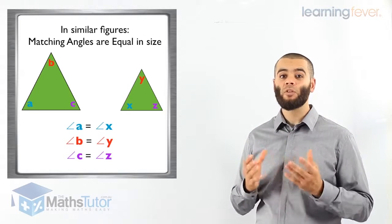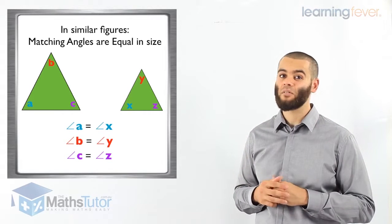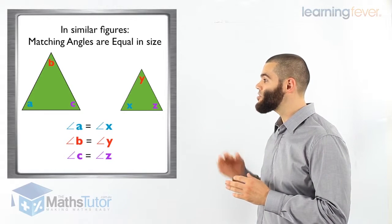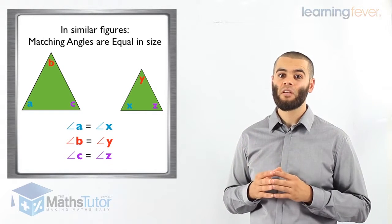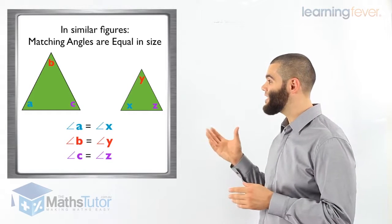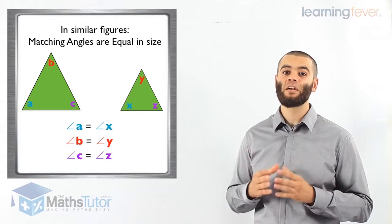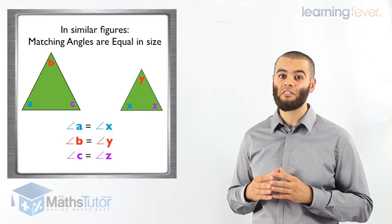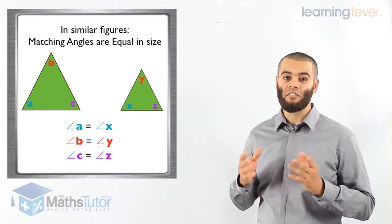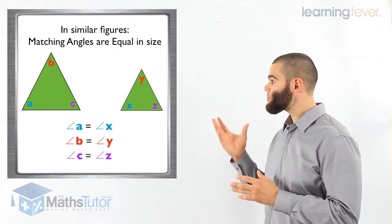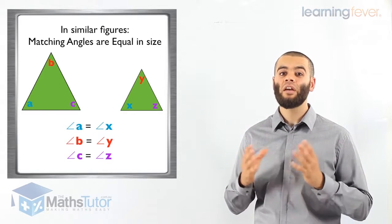What we also know about these angles is that in similar figures, matching angles — angles that are in corresponding positions — are equal in size. So that means angle A equals angle X. If angle A was 70 degrees, angle X will also be 70 degrees. Angle B is matching to angle Y, therefore angle B equals angle Y. If angle B was 30 degrees, angle Y is going to be 30 degrees. And angle C corresponds with angle Z, which means it is a matching angle — they are also equal in size. So if angle C was 60 degrees, then angle Z will be 60 degrees. In similar figures, angles that are in corresponding positions are matching angles and they are equal to one another.